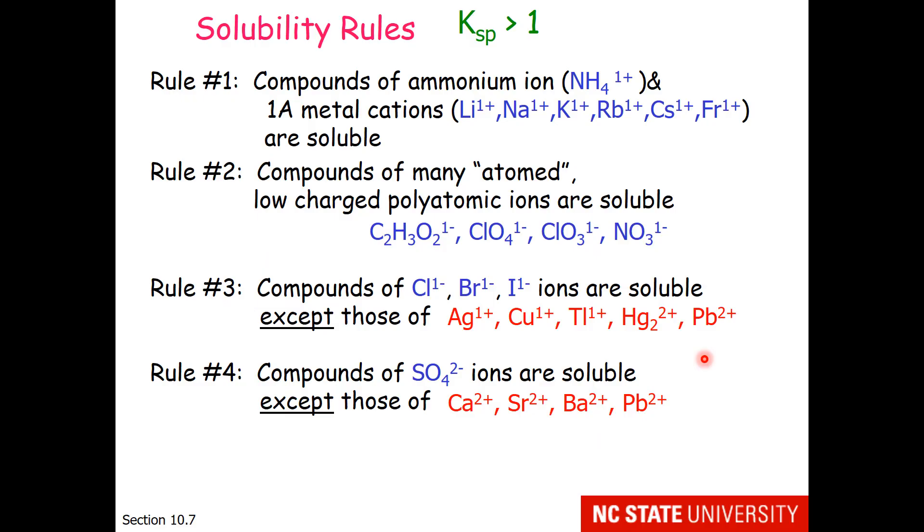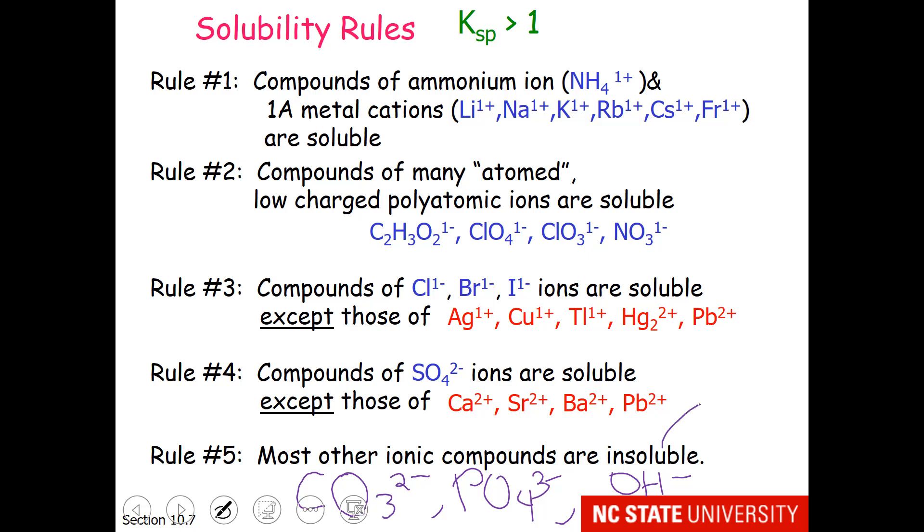Our last rule is the catch-all. Most other ionic compounds are insoluble. So this might be anions like carbonate, phosphate, and even quite a few hydroxides are insoluble. Please let me remind you that the word insoluble means they precipitate. And these exceptions with sulfate precipitate, and these exceptions with the halides also precipitate.